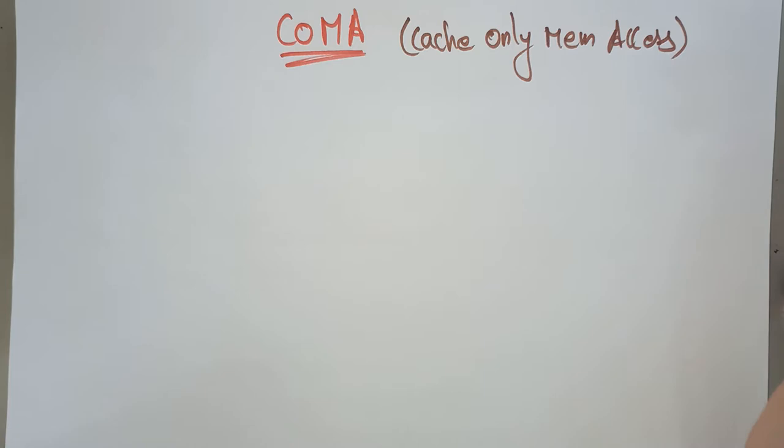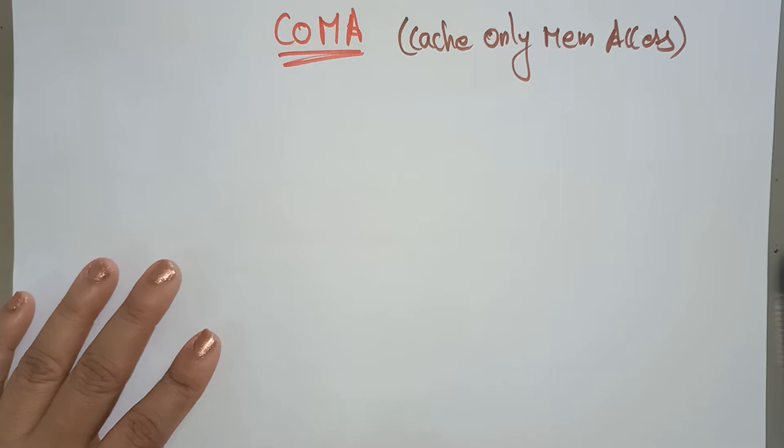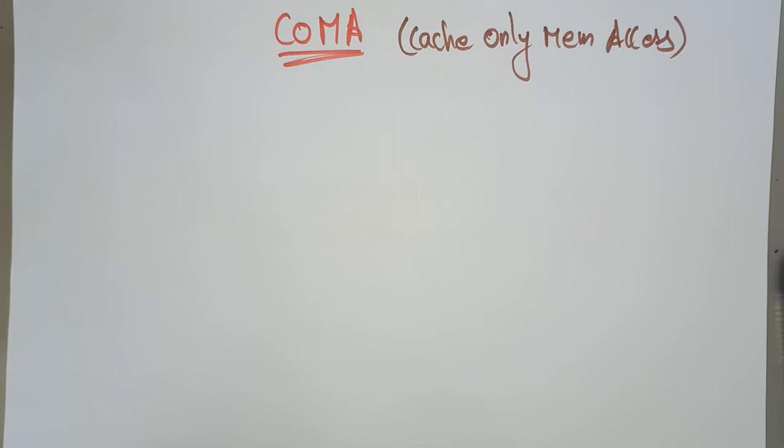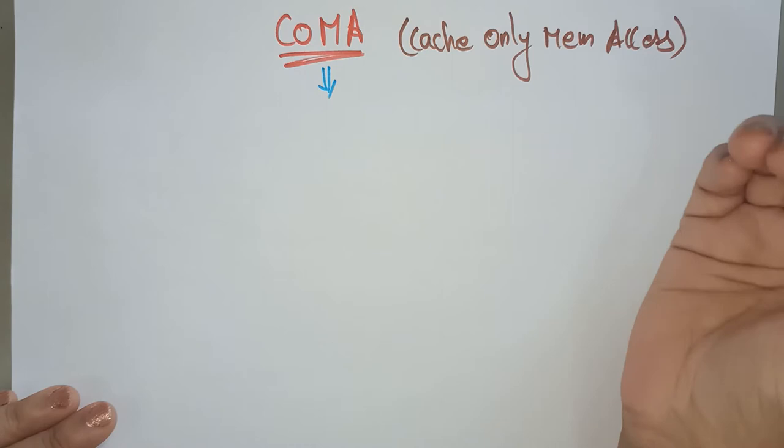So what do we mean by COMA? In COMA, data has no specific permanent location. Where do data stay and when can they be read or modified? COMA is a special case we are considering — Cache Only Memory Access.